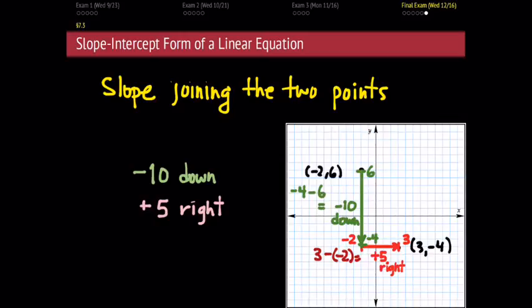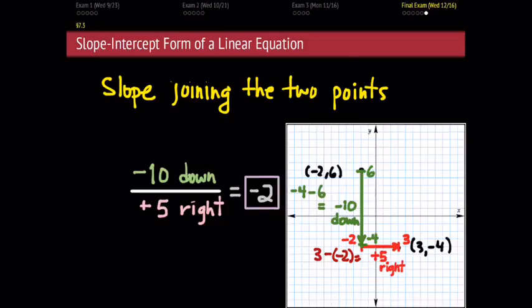So we have negative 10, the vertical separation, telling us how far down we went, and positive 5, the horizontal separation, telling us how far right we went. To get one number out of this comparison, we divide: vertical difference divided by horizontal difference. Negative 10 divided by 5 gives us negative 2. And that right there is the number we call the slope of this line — what we call m. The slope is negative 2.